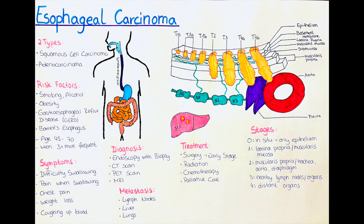Treatment options for carcinoma of the esophagus depend on the stage and location of the cancer. Surgery is often the preferred treatment for early stages, where the cancer is limited to the inner lining of the esophagus. The surgical procedure may involve removing a portion or all of the esophagus and reconstructing it using tissue from other parts of the body. Radiation therapy and chemotherapy may also be used in combination with surgery to improve the chances of a successful outcome.